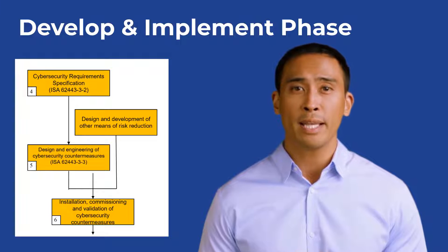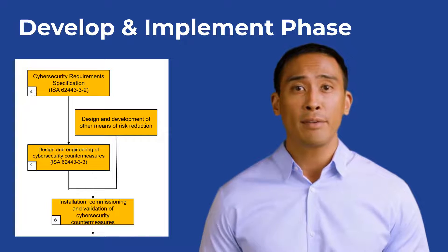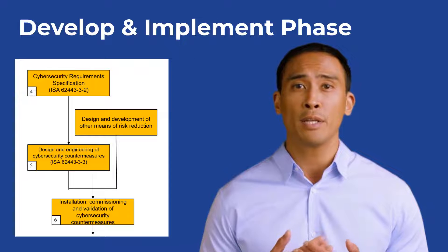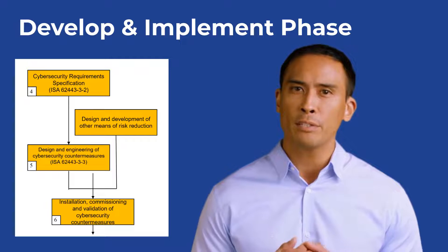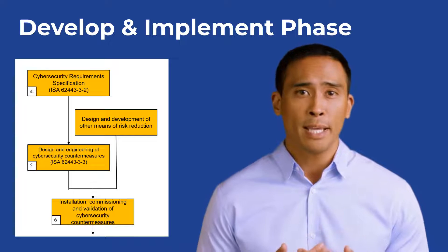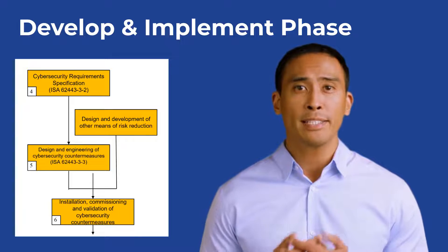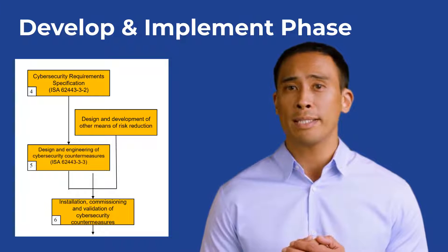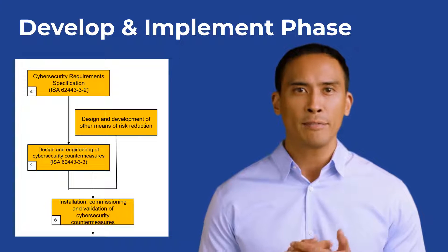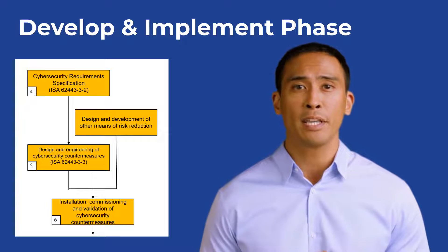Now let's move on to the develop and implement phase. The focus is on building a secure IACS infrastructure that can withstand cyber threats. Begin by designing a secure network architecture — segment networks, isolate critical components, and implement strong firewall rules. Intrusion detection and prevention systems should be in place to monitor and protect against threats. When developing software for IACS, prioritize security: use secure coding practices, regularly update software, and promptly apply patches to address known vulnerabilities. Implement robust access control mechanisms, define user roles and permissions, enforce strong authentication methods, and regularly review and update access policies. Train personnel in cybersecurity best practices.